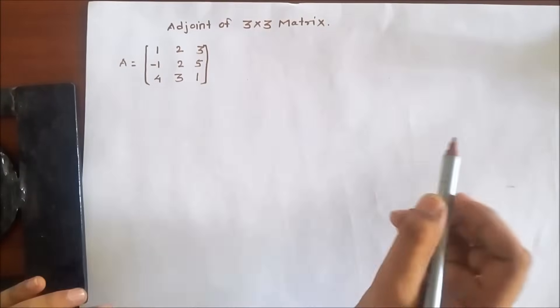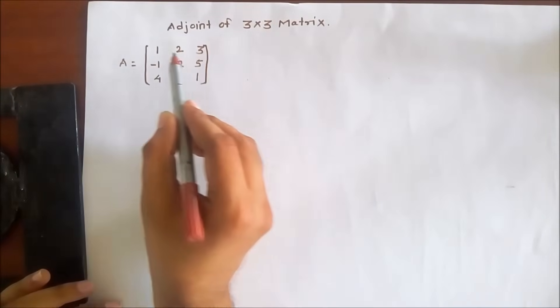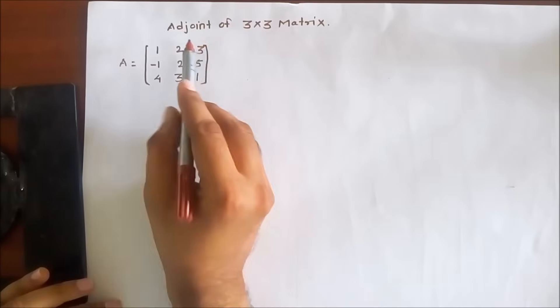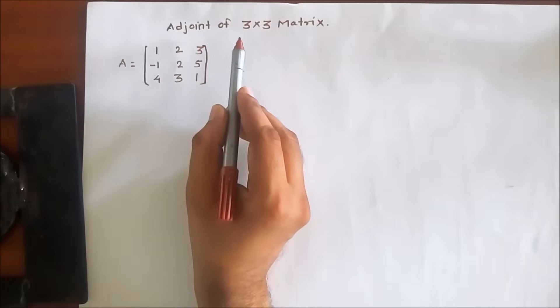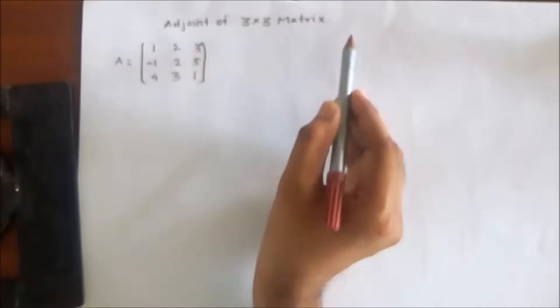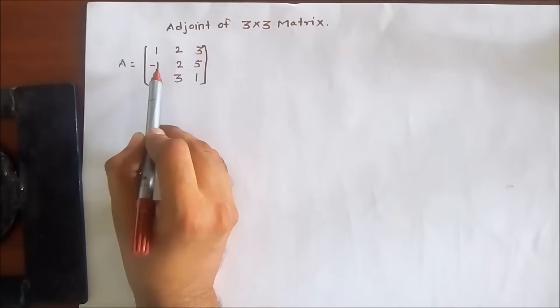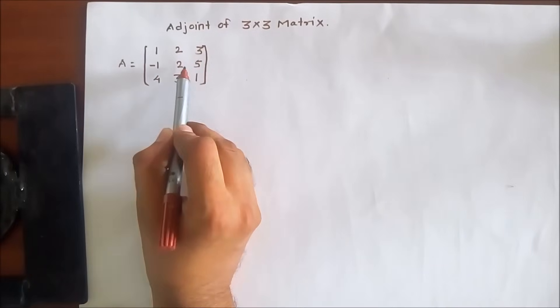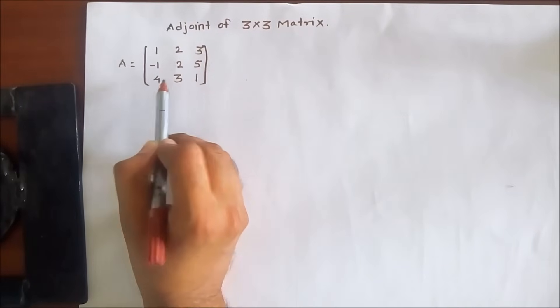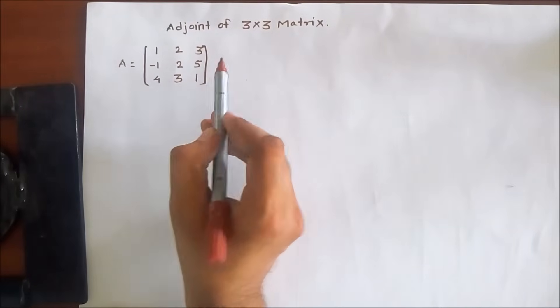Hi friends. Now we are going to see adjoint of a 3x3 matrix. The given matrix A is [1, 2, 3; -1, 2, 5; 4, 3, 1].